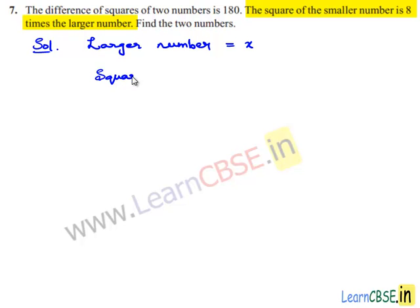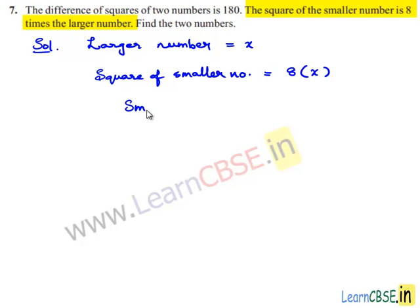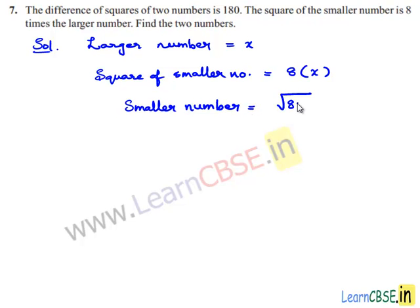The square of the smaller number is equal to 8 times the larger number. So the smaller number is equal to the square root of 8x.